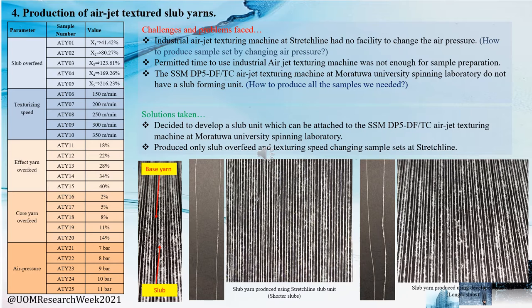When it comes to the production of air jet texturing slab yarns, you can clearly see the five parameters we have chosen to change: slab overfeed, texturing speed, effect yarn overfeed, co yarn overfeed, and air pressure, along with the values chosen for each. When one parameter is changing, the other four parameters are kept constant at their middle values.